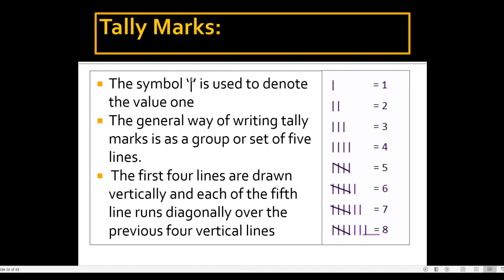We use a vertical line as the symbol for one value. The general way of writing tally marks is as a group or set of 5 lines. The first 4 lines are drawn vertically, and the 5th line runs diagonally over the previous 4 vertical lines.